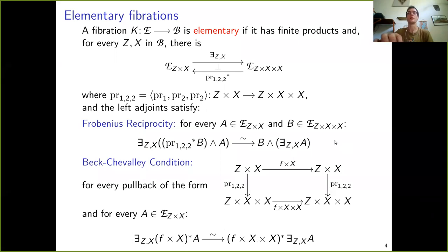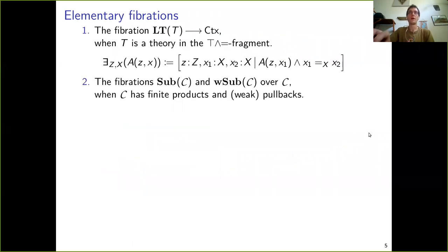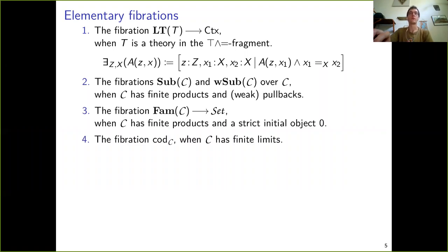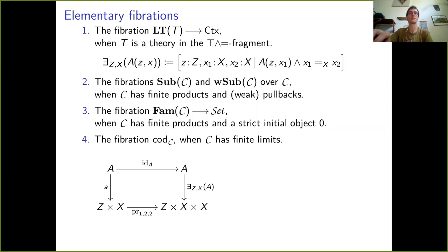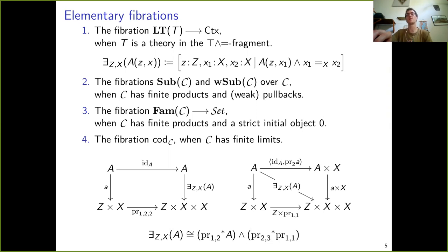These two isomorphisms live in the fiber over Z × X × X. For the examples continued from before: if you have a theory with conjunctions and an equality predicate, then the left adjoint on a formula A is defined by pairing the formula with the equality predicate. For the functor to be elementary we just need a strict initial object, and for cod and for the sub-objects and weak sub-objects fibrations, the left adjoint is defined by post-composition with the parameterized diagonal — equivalently as the diagonal in a pullback square — so the left adjoint has the form of the predicate A paired with the equality predicate.